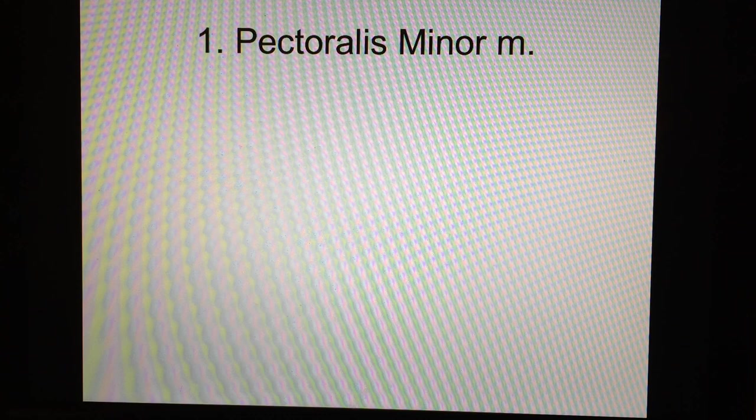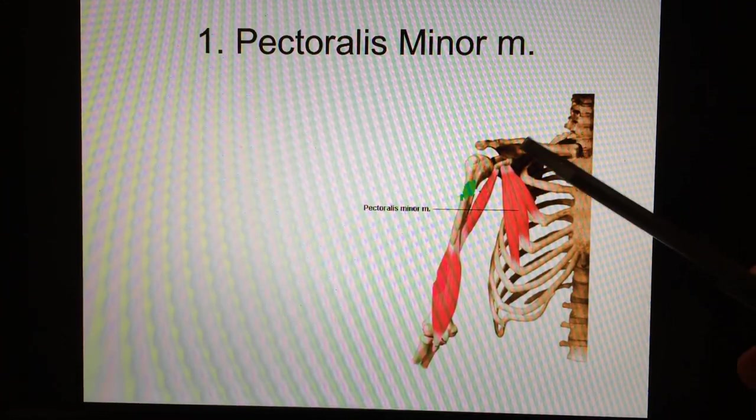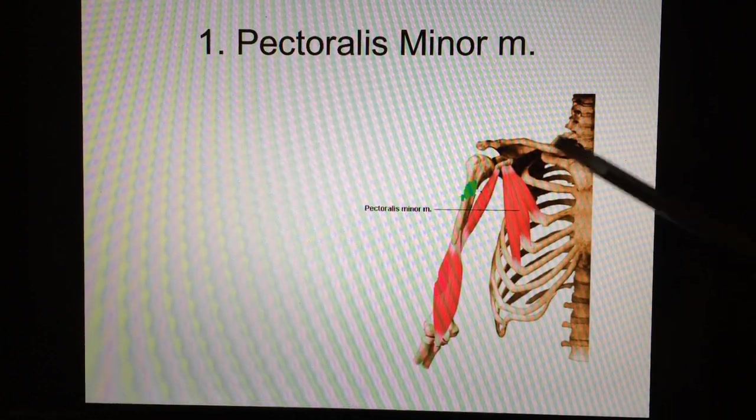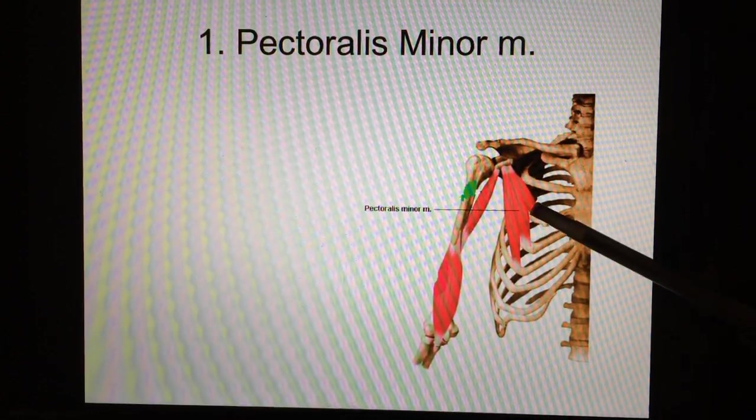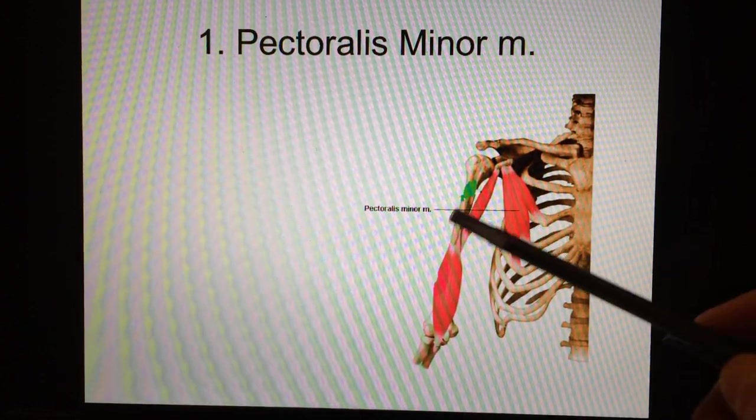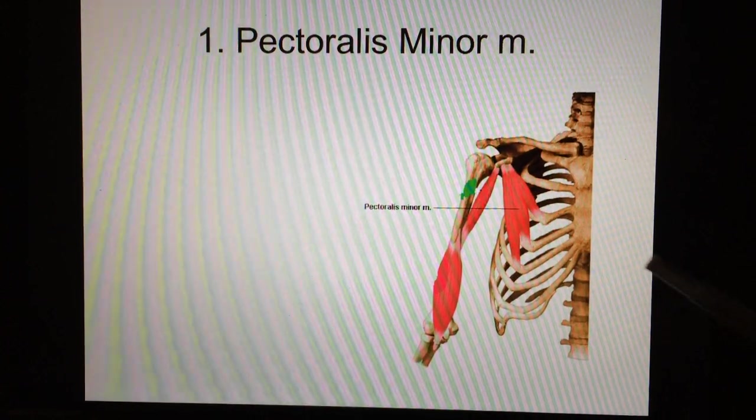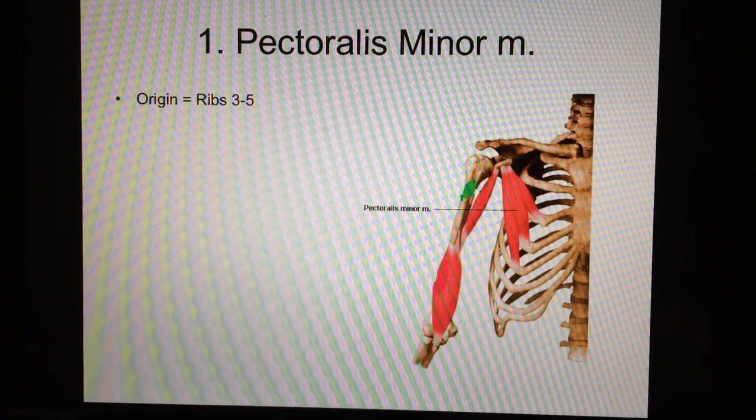Pectoralis minor is the first muscle, and you can see it's actually deep. Pectoralis major, the big chest muscle, is going to be right here. We'll do that one next. But this is it right here, pectoralis minor. What's minor mean? Small. Pectoralis means chest, so this is the small chest muscle.